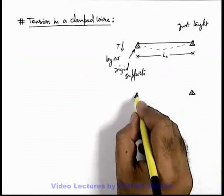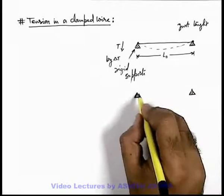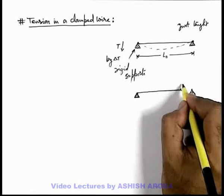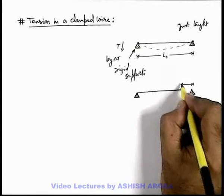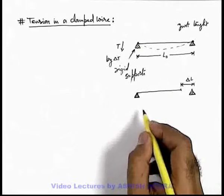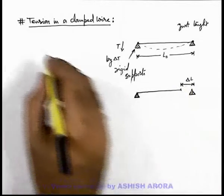In this situation, say we open the wire from one end, then what happens is the wire will contract up to this much of length, say which is delta L. Earlier it was L naught. It'll be contracted by a length delta L.